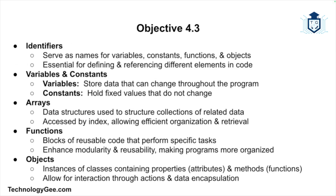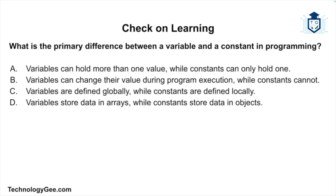To summarize the key programming concepts covered: identifiers are names used for variables, constants, functions, and objects. Variables store data that can change while constants hold fixed values. Arrays are data structures used to store collections of related data accessed by an index. Functions are blocks of reusable code that perform specific tasks and improve modularity and reusability. Objects are instances of classes that contain properties or attributes and methods, which allow them to perform certain actions. Understanding these core concepts is essential for programming and foundational for the CompTIA Tech Plus exam.